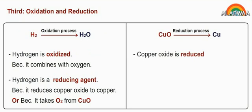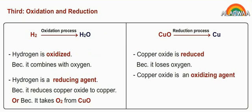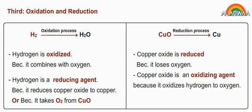Reduction process. Copper oxide is reduced because it loses oxygen. Copper oxide is an oxidizing agent because it oxidizes hydrogen, or because it gives oxygen to hydrogen.